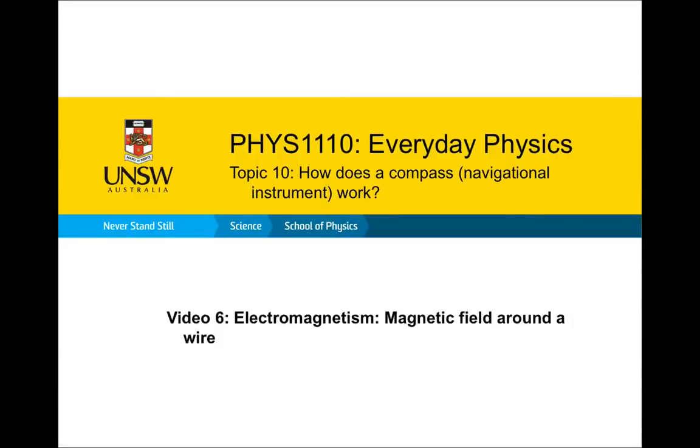This is video 6 in topic 10 on how does a compass work. In this video, we're going to be looking at the magnetic field around a current carrying wire.